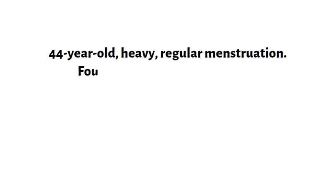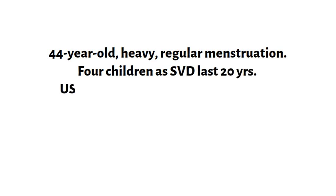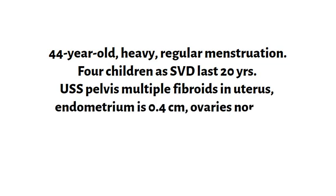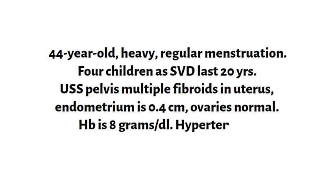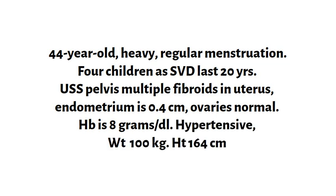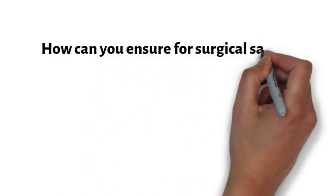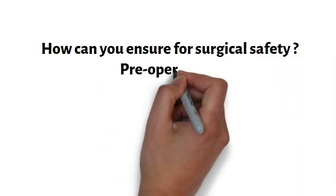She has had four children as spontaneous vaginal deliveries, with the youngest being 20 years old. An ultrasound scan of the pelvis shows multiple uterine fibroids and normal ovaries. The hemoglobin level is 8 grams per deciliter. She is hypertensive with a weight of 100 kilograms and a height of 164 centimeters. She is counseled for hysterectomy and consents to the procedure.